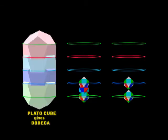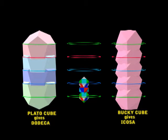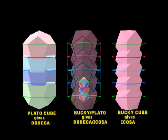The dodecas come out of the Plato cube. The icosas come out of the Bucky cubes. And the Bucky and the Plato in the center will give us both.